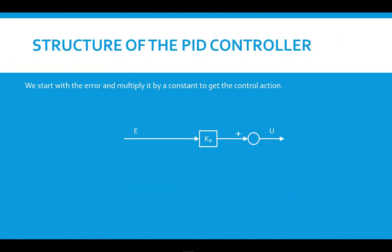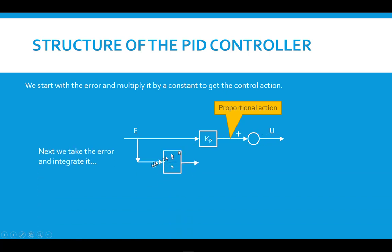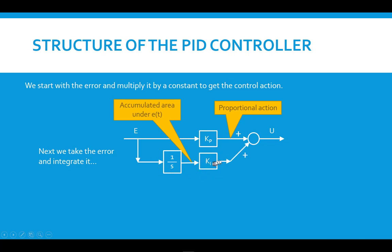Starting with the principal action: we take the error signal and multiply it by a constant to produce what's called the proportional action, which is fed downstream as part of the command to the actuator. Next, we take the error and integrate it — accumulating the error as we go along. This integral sums the area under the error curve up to the current point in time. We multiply that by a constant and feed it in as a contribution to the command signal, which we call the integral action.